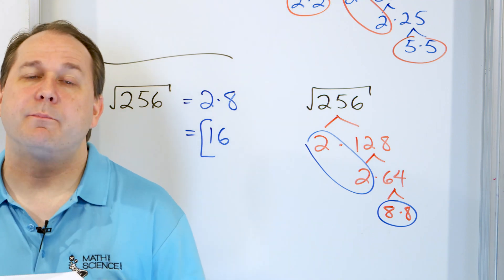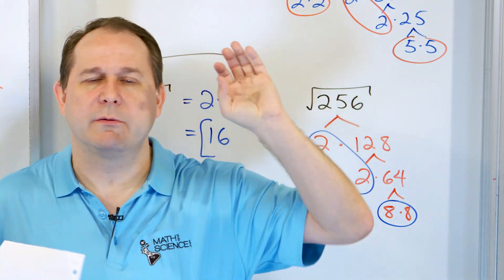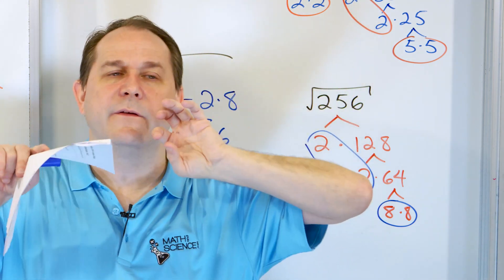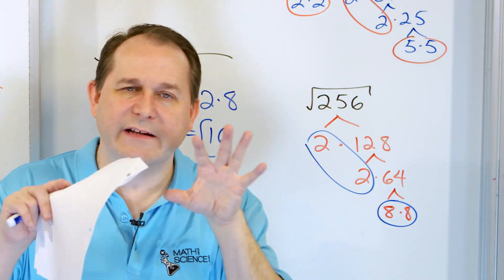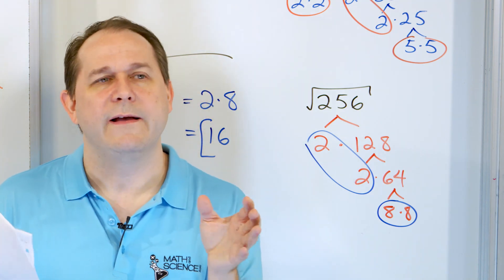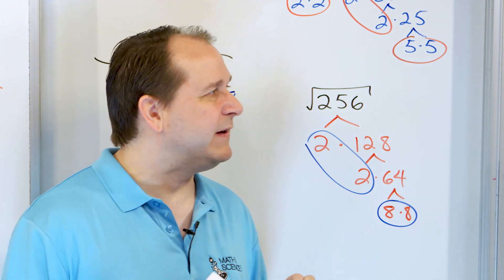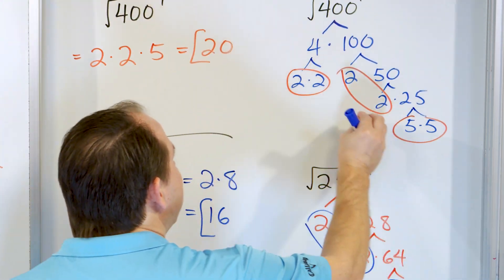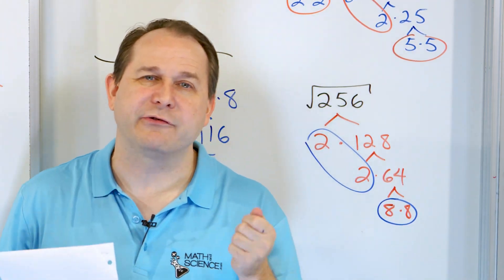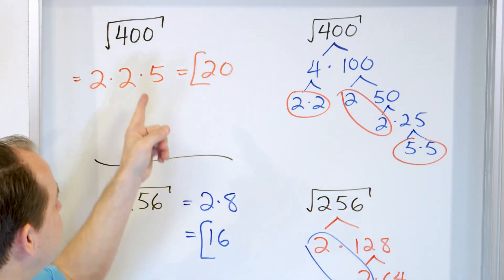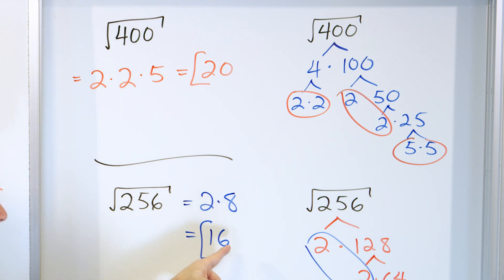The process is exactly the same regardless of the number size. Write down a factor tree, break it down — something times something, it could be anything that multiplies to give you that number — and keep breaking it down until you see pairs. Or if you're not seeing pairs, break all the way down to prime numbers and then look for pairs. Every single time we did that, we were able to pull pairs out and get whole number answers. All of these problems are specially constructed to be perfect squares.